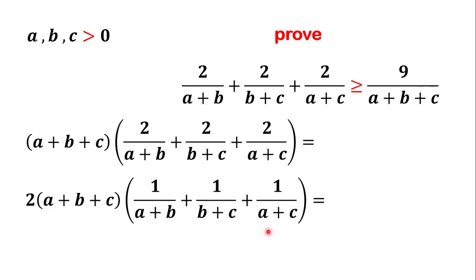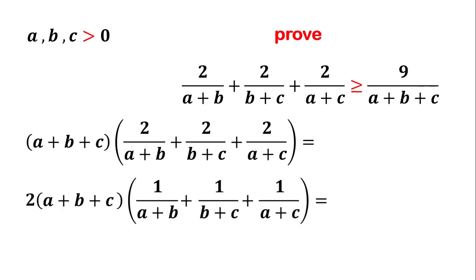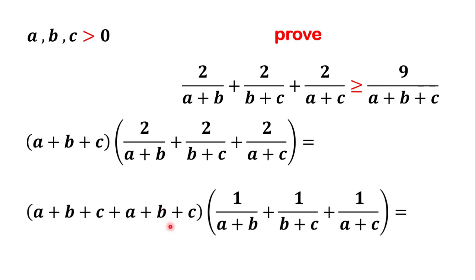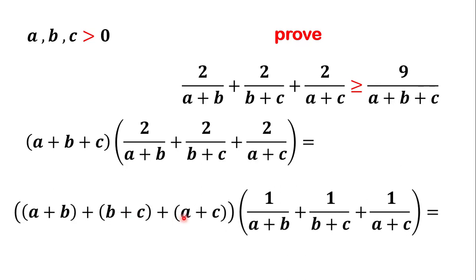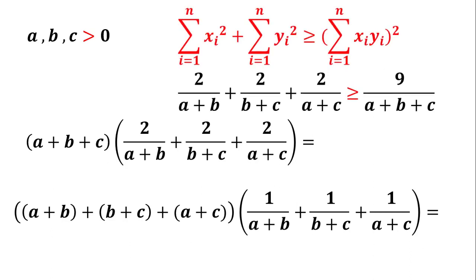Now, 2 times (a+b+c) can be written as the sum of (a+b+c) with itself. So we can write (a+b+c) plus (a+b+c), and we can rewrite the terms in this parentheses as (a+b) plus (b+c) plus (a+c). In the next step, we can use the Cauchy-Schwarz inequality.